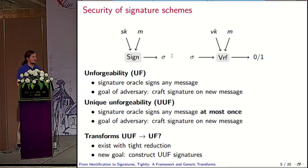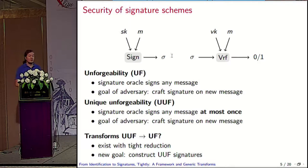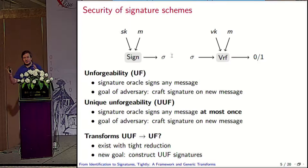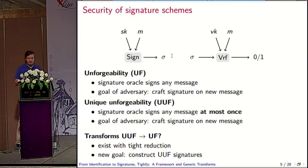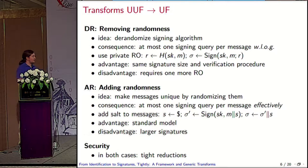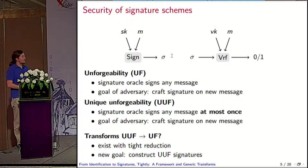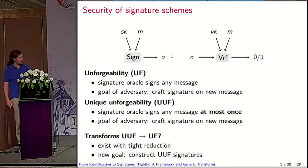We call this unique unforgeability, and it is very similar to standard unforgeability but with one exception: the signature oracle can be queried at most once on each message. So the adversary can say 'sign the string Alice' but it cannot say a second time 'sign the string Alice for me.' The second notion is more restricted than the first, so there's an implication from UF to UUF. One can also show that this implication is strict. The question is then: do we have transforms that bring the weak notion to the strong one? I show two such transformations on the next slide.